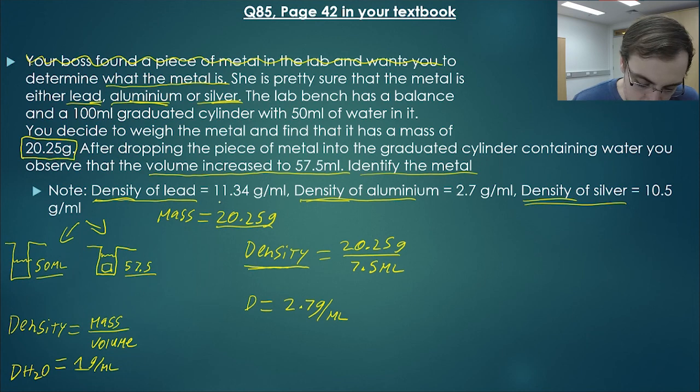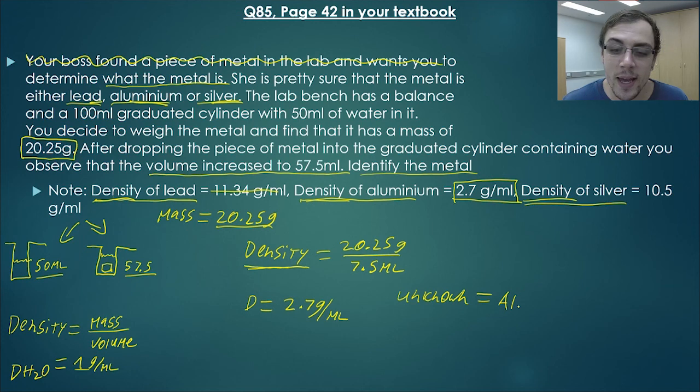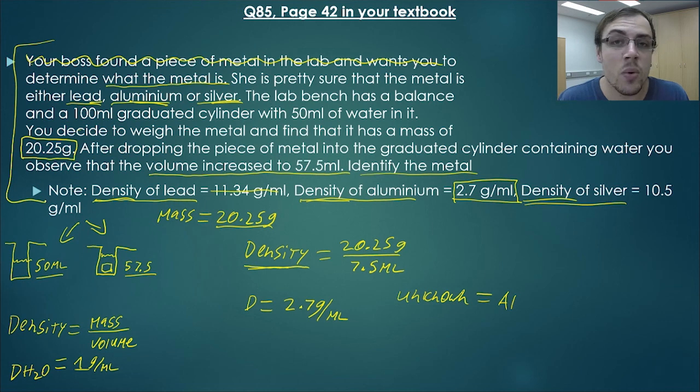We look through our choices: 11.34, no. 2.7, bingo. There we have. So that means our unknown metal is aluminium. And it's as easy as that, guys. You can have this massively large question that's giving you all of this information and trying to tell you this massive backstory. It doesn't necessarily mean that the question is overly difficult. It just requires you to go digging for the information.